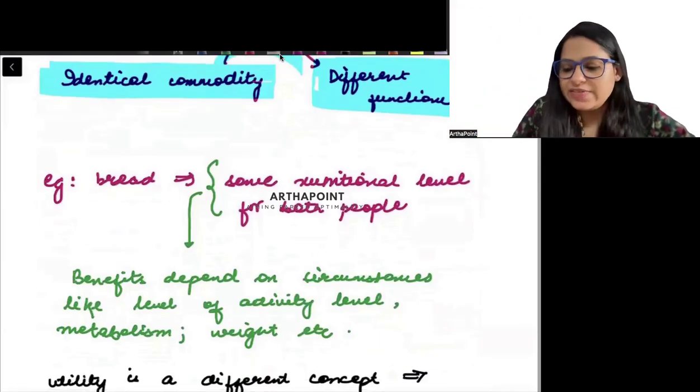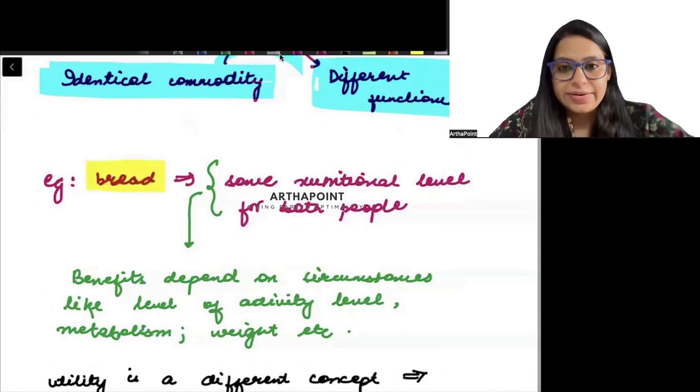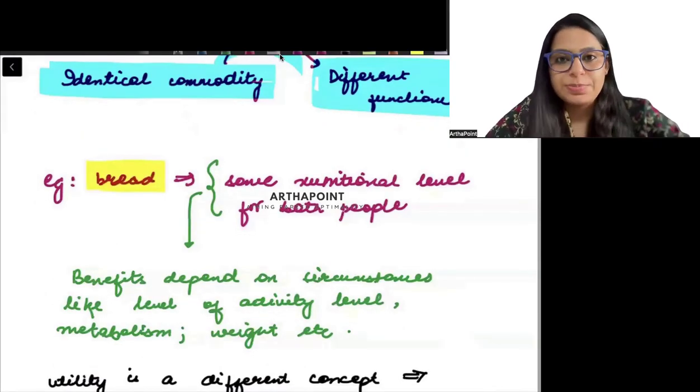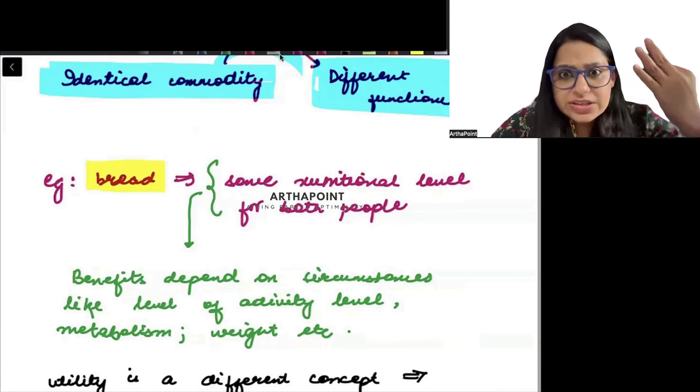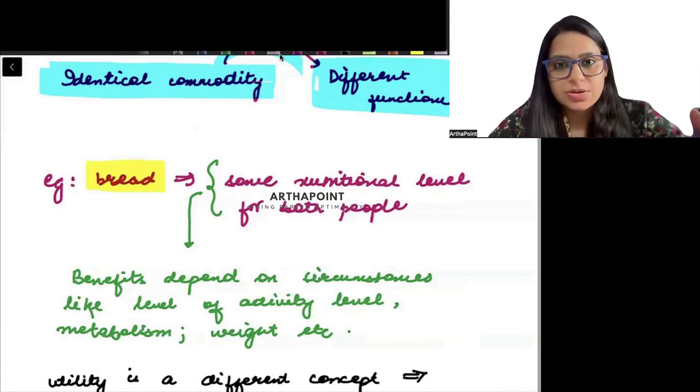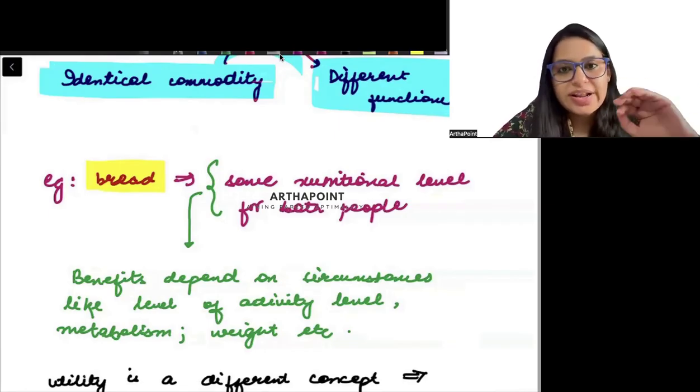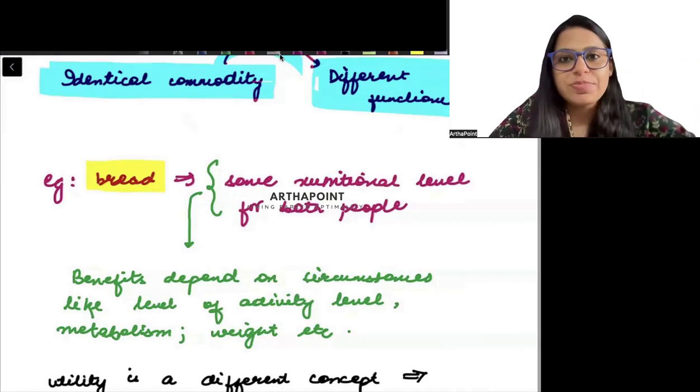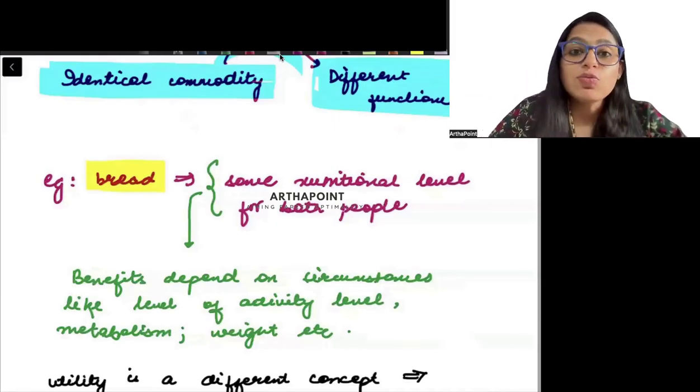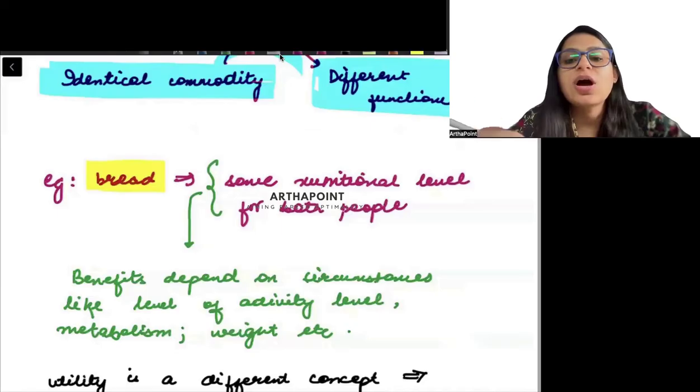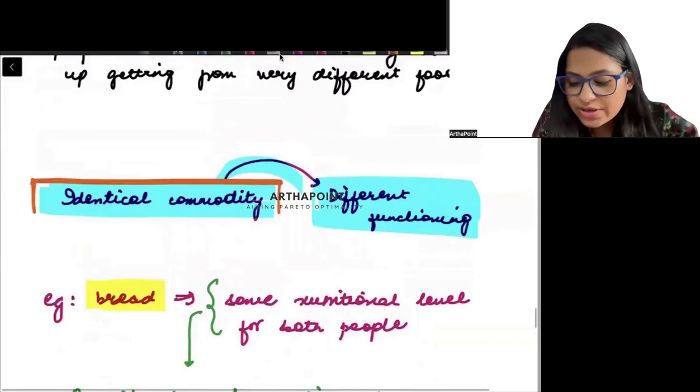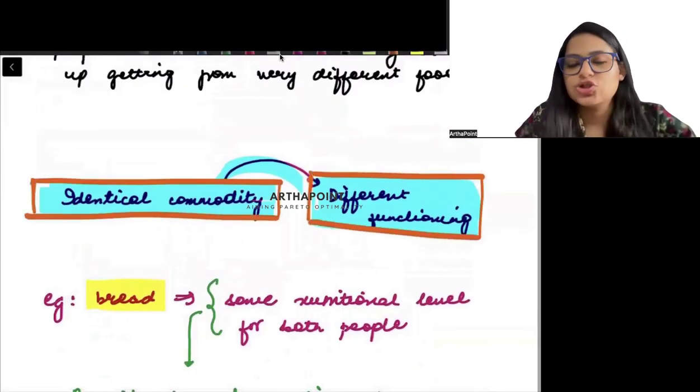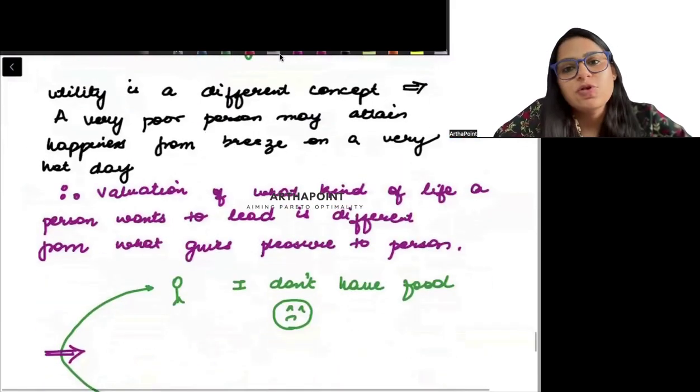And to explain this, Amartya Sen also goes ahead and gives the example of bread. The same bread can give different benefit to people depending on how their body is, whether they are obese or not, whether they perform any activity or not. So to digest carbs, I need to go ahead and have good metabolism. I need to do some amount of activity. So two people consuming the same bread, depending on what is the metabolism of that body, depending on how much activity level the person does, depending on the weight of the person. So the conclusion is that same commodity can have different functionings. Ek hi commodity ke jo functionings hote hain, wo alag hote hain.